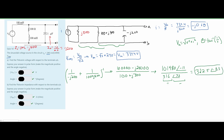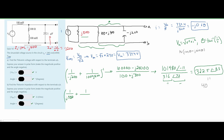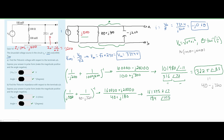That's the combined value of the rightmost two impedances. Now we combine this result with j500 in parallel: (1/(j500) + 1/(322.5∠−83°))⁻¹. Since we can't combine polar and rectangular directly, we convert 322.5∠−83° to rectangular form ≈ 40 − j320. Solving the parallel combination and converting back to polar gives approximately 875 ∠ −70°.